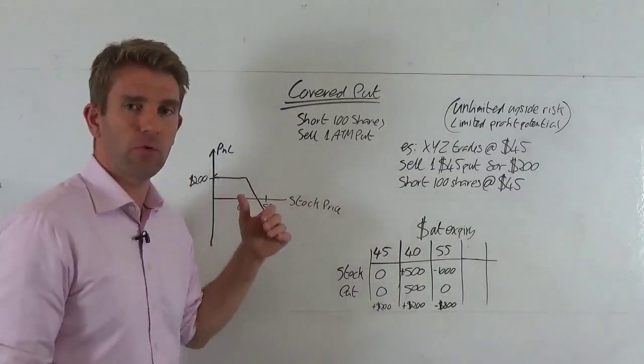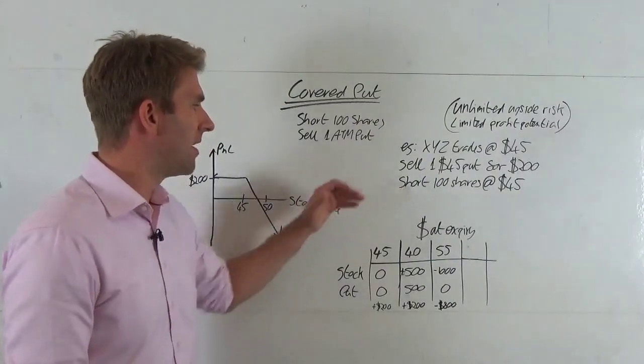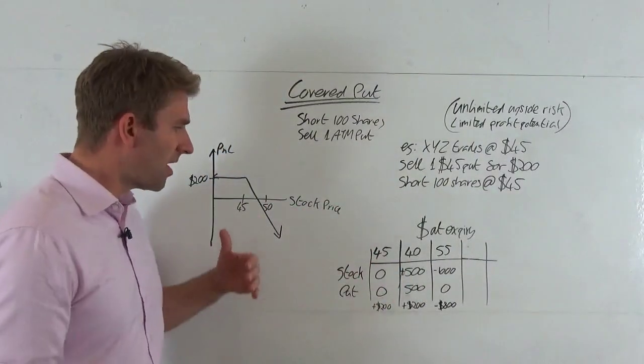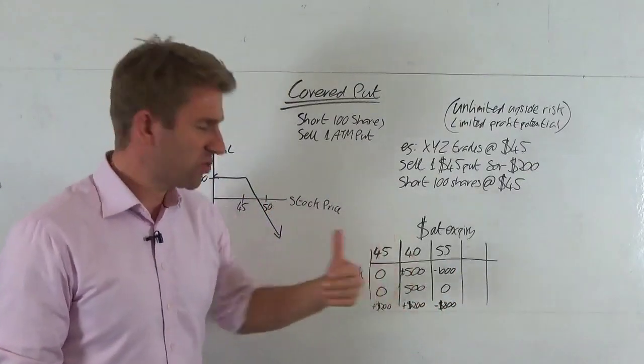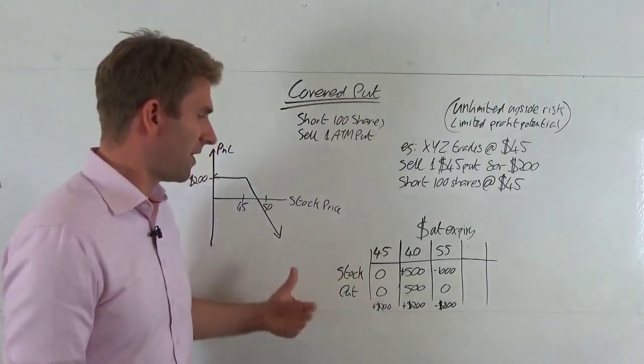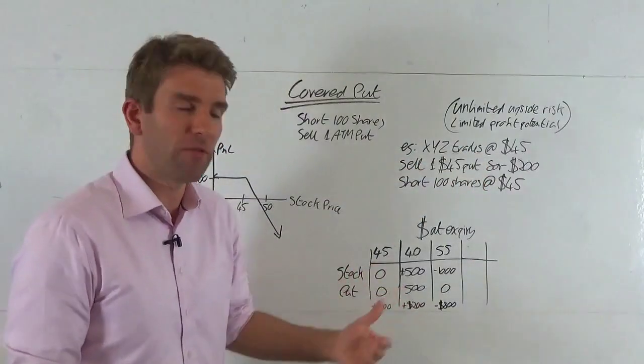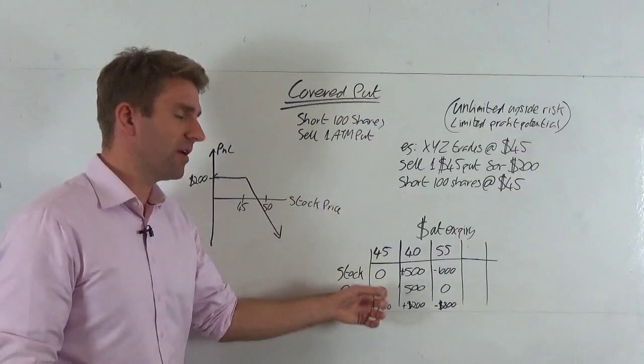If the stock goes down to $40, if we were naked short 100 shares we would have made $500 on that deal, because the further it goes down we're 100 shares short, we're making $500 from the difference between the $45 we sold it at and the $40 we'd have covered it at.